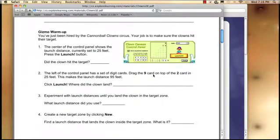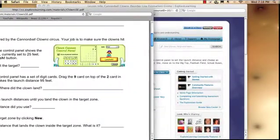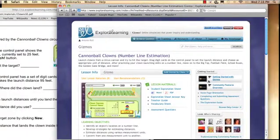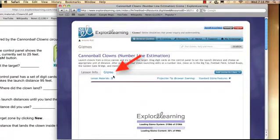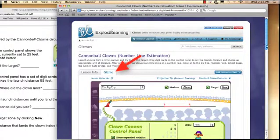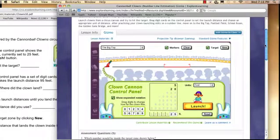Gizmo warm-up. Again, here's an opportunity to work with the students on how to use a gizmo. So it says, you've just been hired by the Cannonball Clown Circus. Your job is to make sure the clowns hit their target. One, the center of the control panel shows the launch distance, currently set to 25 feet. Press the launch button. Did the clown hit the target? So, go to your gizmo and click on this tab here. It'll launch the gizmo. It takes a bit of time. You should definitely go over this before you show this to the students.